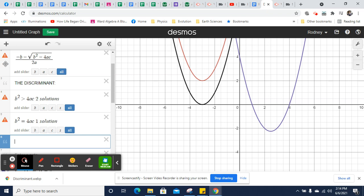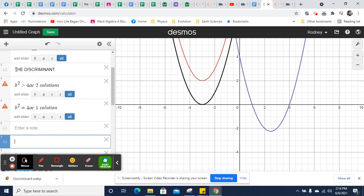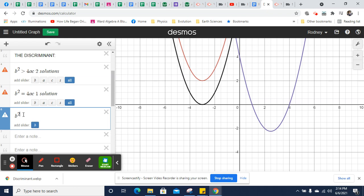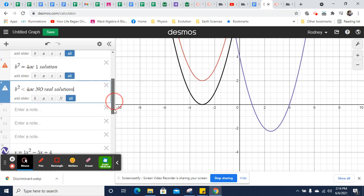And then if I were to have b squared is less than 4ac, then I have no real solutions. And that's a quick shortcut you can use for this.